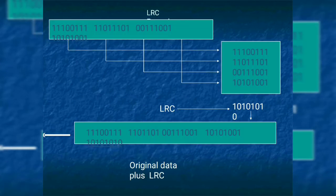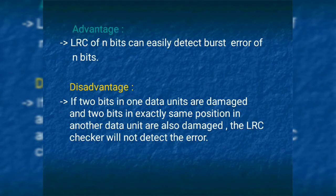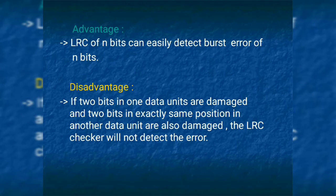Suppose there is an error received at the receiver side — 2 or more bits are changed. Here these 2 bits are changed in the first column. What we get here: 1 is changed to 0, 1 is changed to 0, so number of ones are still odd. The redundant bit will not change, so it is unable to detect the error. That is the drawback of LRC. The advantage is LRC can be applied for n number of bits and can detect burst errors. The disadvantage is: if 2 bits in one data unit are damaged in exactly the same position in other data units, the LRC checker will not detect the errors.